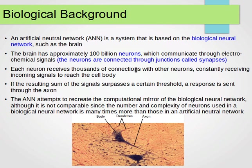An artificial neural network is a complicated system, not complicated really. The biological one is complicated, by the way. It's a system that's based or inspired by the biological neural network, such as the brain.